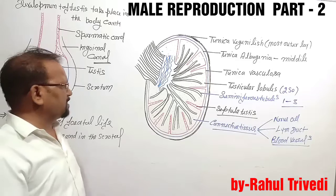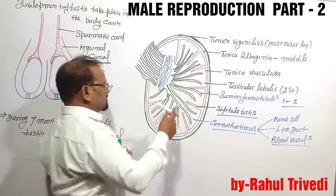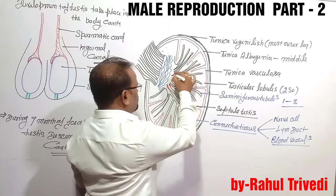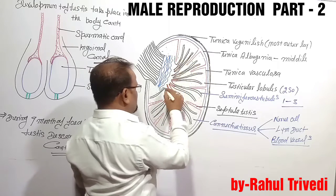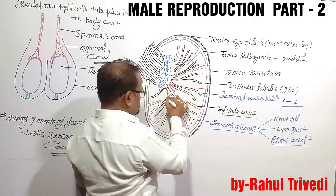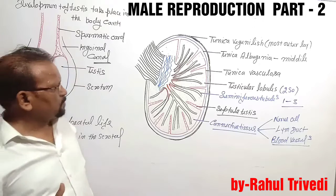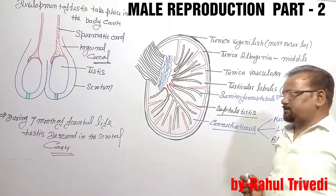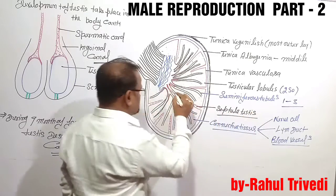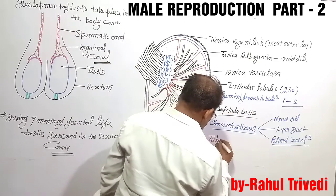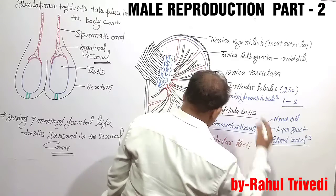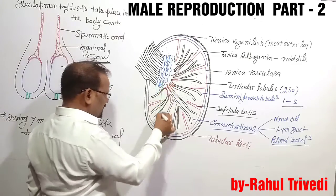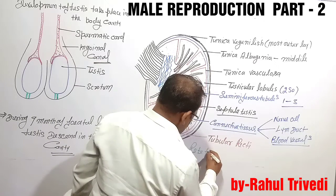These seminiferous tubules, as you move toward the posterior side, form a duct system that is slightly separate. Finally, they open into an ampulla-like structure. The posterior end of the seminiferous tubules is called tubuli recti, and the tubuli recti opens into this ampulla-like structure called the rete testis.